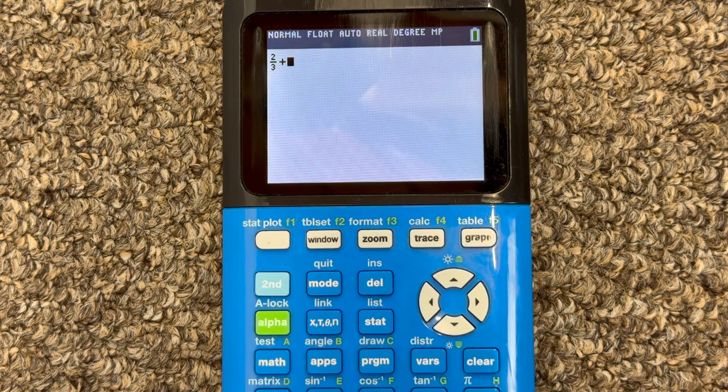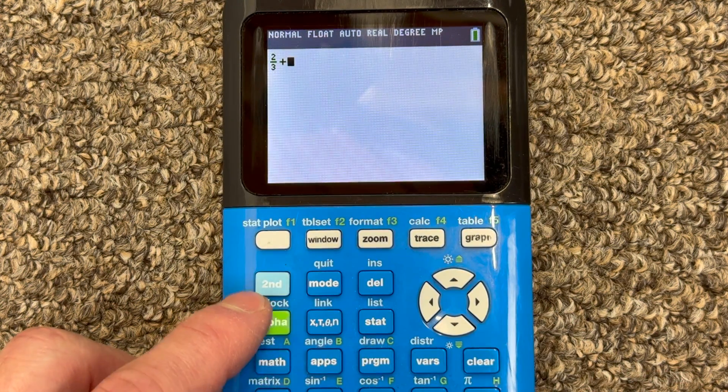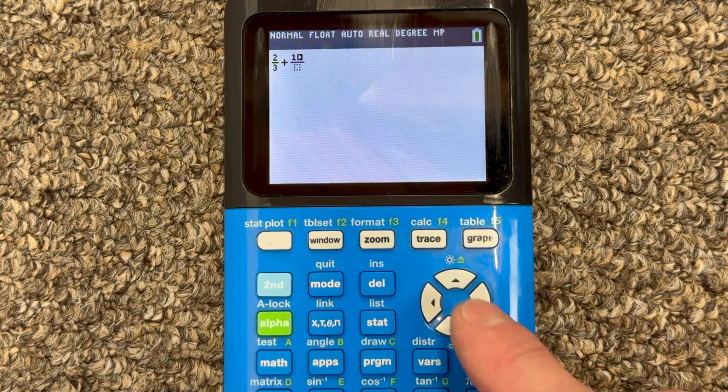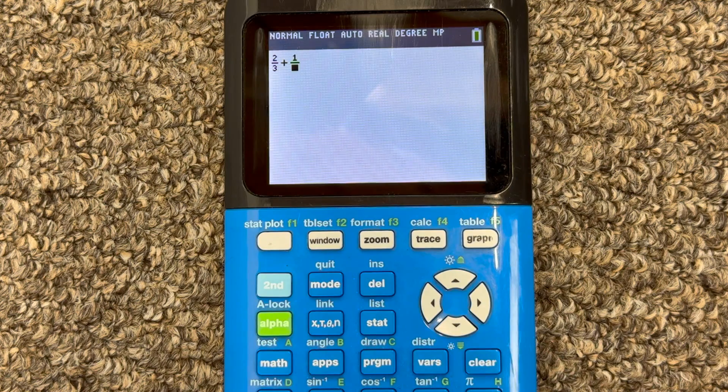And let's add that to another fraction. So we'll go back into that secret menu there, alpha Y equals, and then press enter again. And we've got one divided by five.